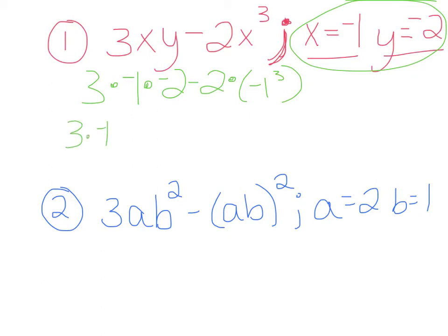So first thing we want to look for is exponents. So we have 3 times negative 1 times negative 2 minus 2 times negative 1 cubed is just negative 1 times negative 1 times negative 1, which will be negative 1. Now we want to look for our multiplication. So 3 times negative 1 gives me negative 3 times negative 2 gives me positive 6. So I have 6 minus, and then I can also take 2 times negative 1, which gives me negative 2.